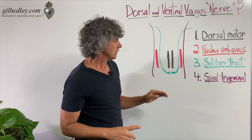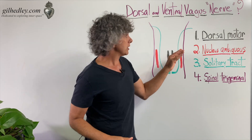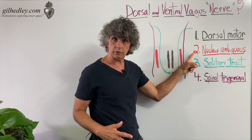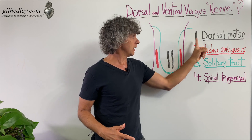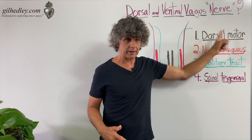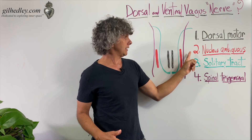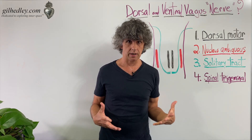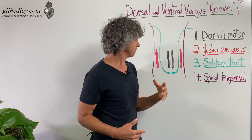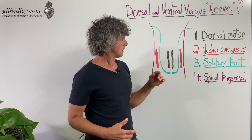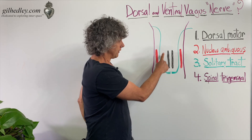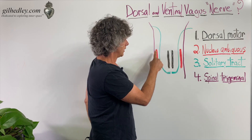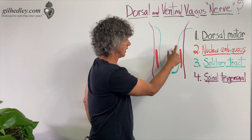Porges references most particularly two nuclei: the dorsal motor vagal nucleus and the nucleus ambiguus, in his discussion of polyvagal theory. Here we have the dorsal motor vagal nucleus and the nucleus ambiguus.